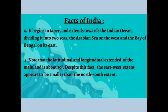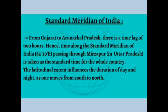The latitudinal and longitudinal extension is about 30 degrees for the mainland. The east-west extent is a little smaller than the north-south extent, meaning the distance from north to south of India is a little bigger than the distance from east to west.